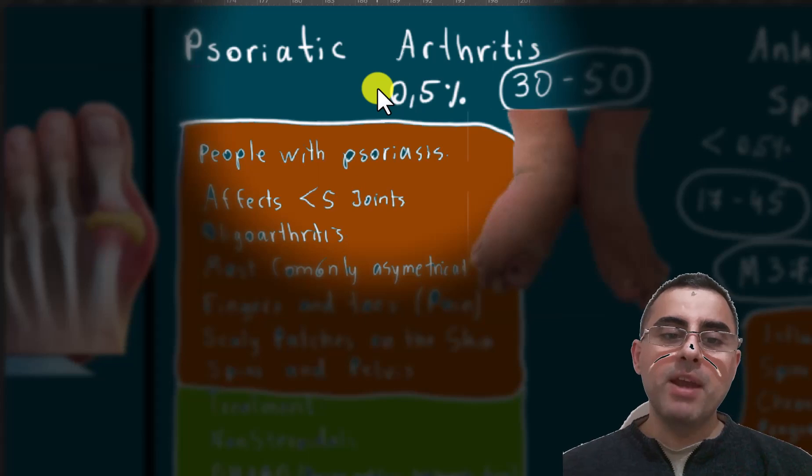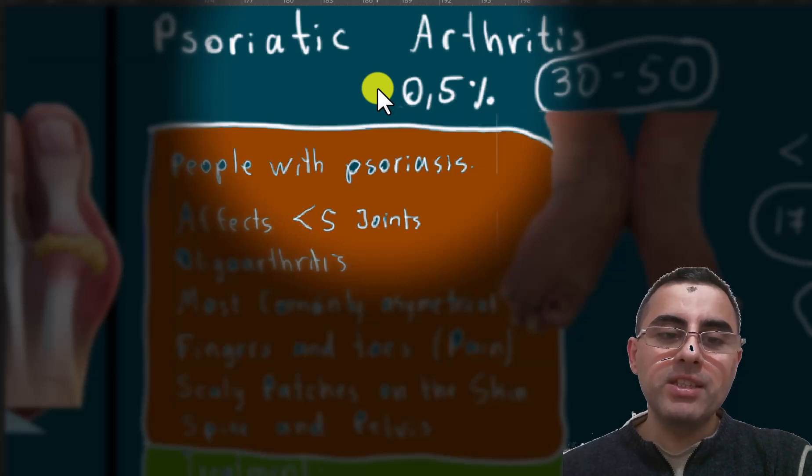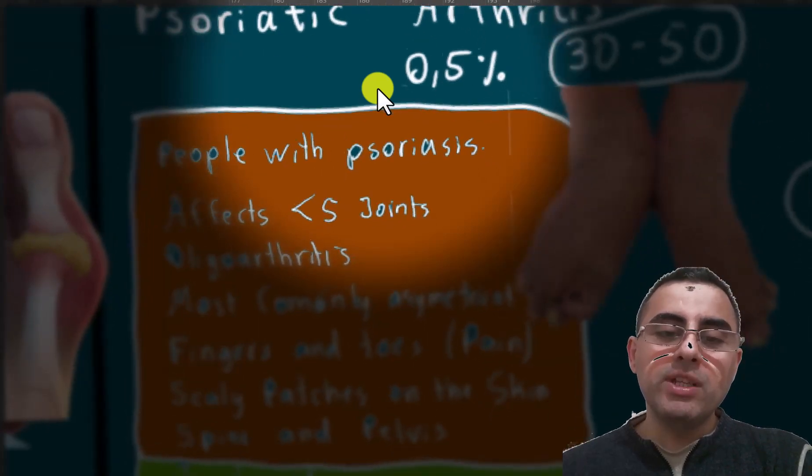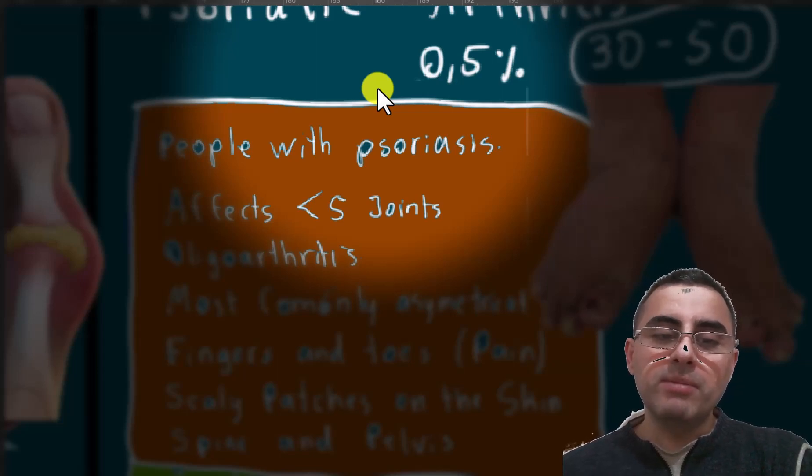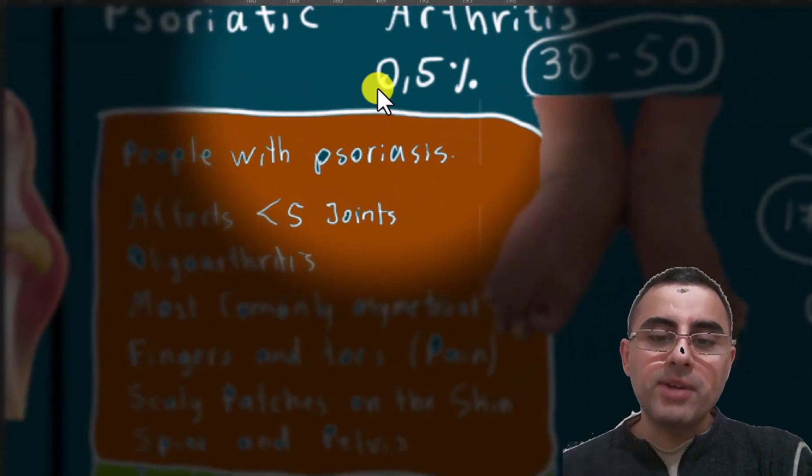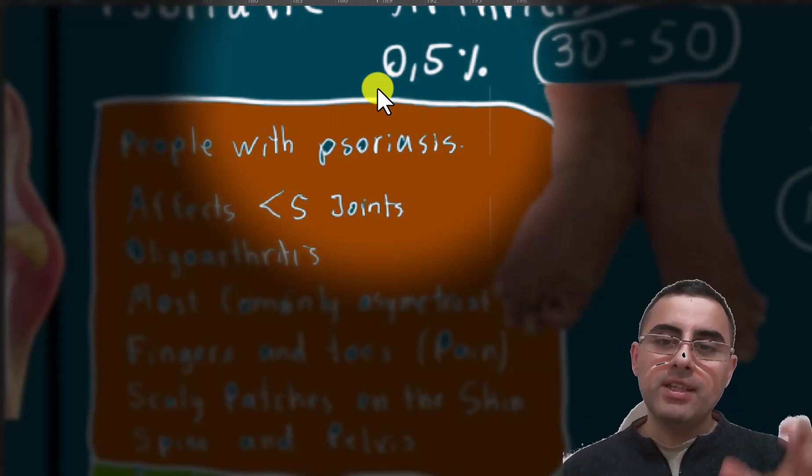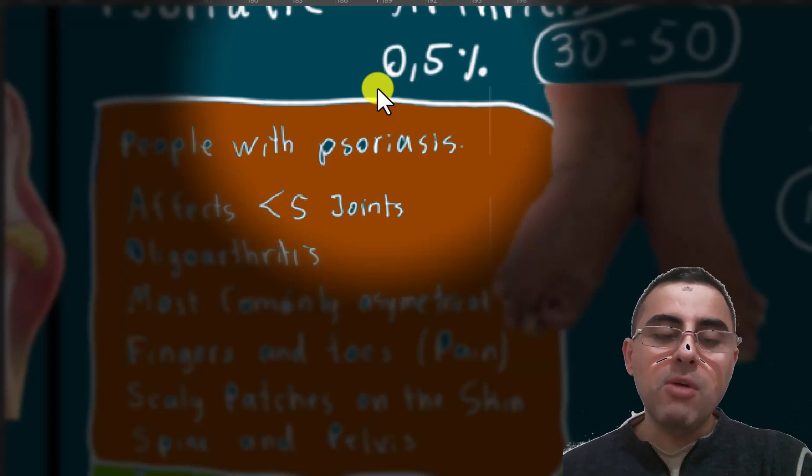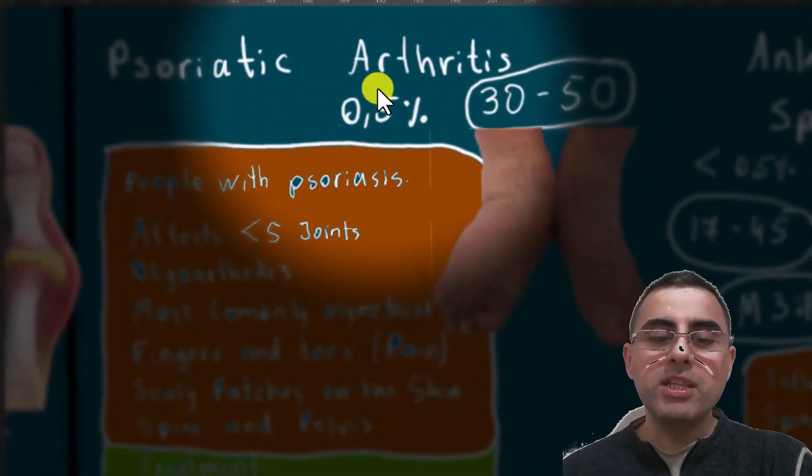Psoriatic arthritis affects around 0.5% of the population and is diagnosed usually between 30 to 50 years. It occurs in people with psoriasis, usually affects less than five joints, so it's called oligoarthritis. Most commonly the arthritis is asymmetrical, so it does not affect joints symmetrically. Common are fingers, toes, and nails.